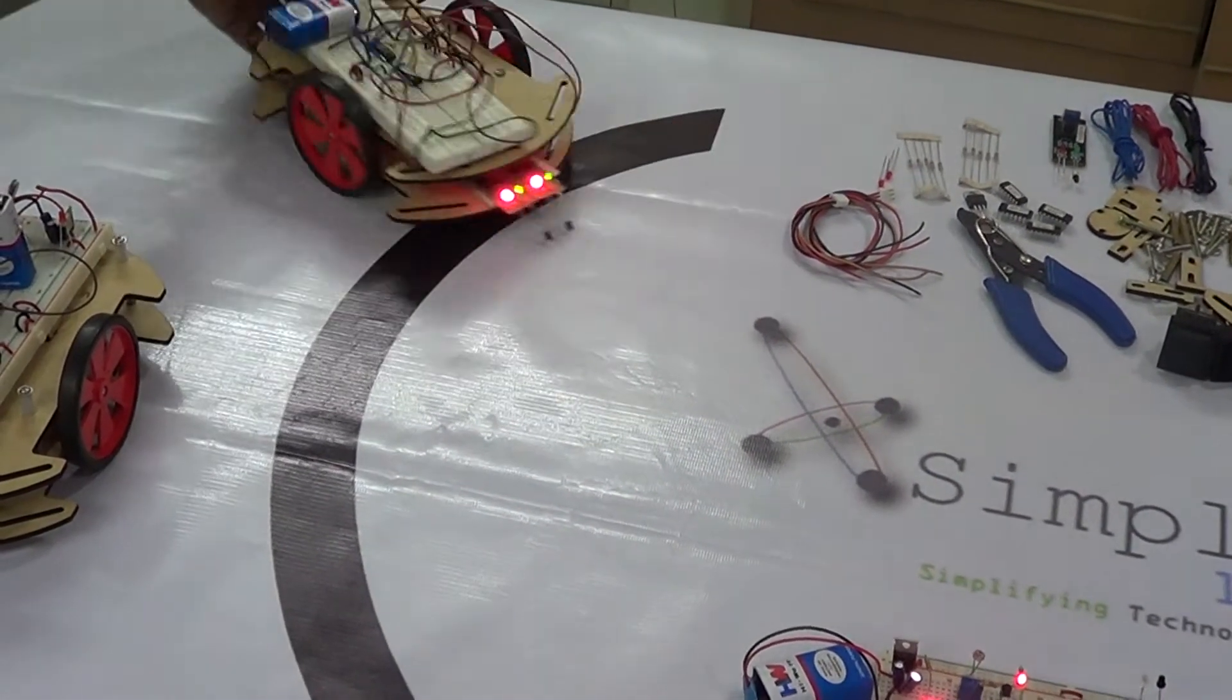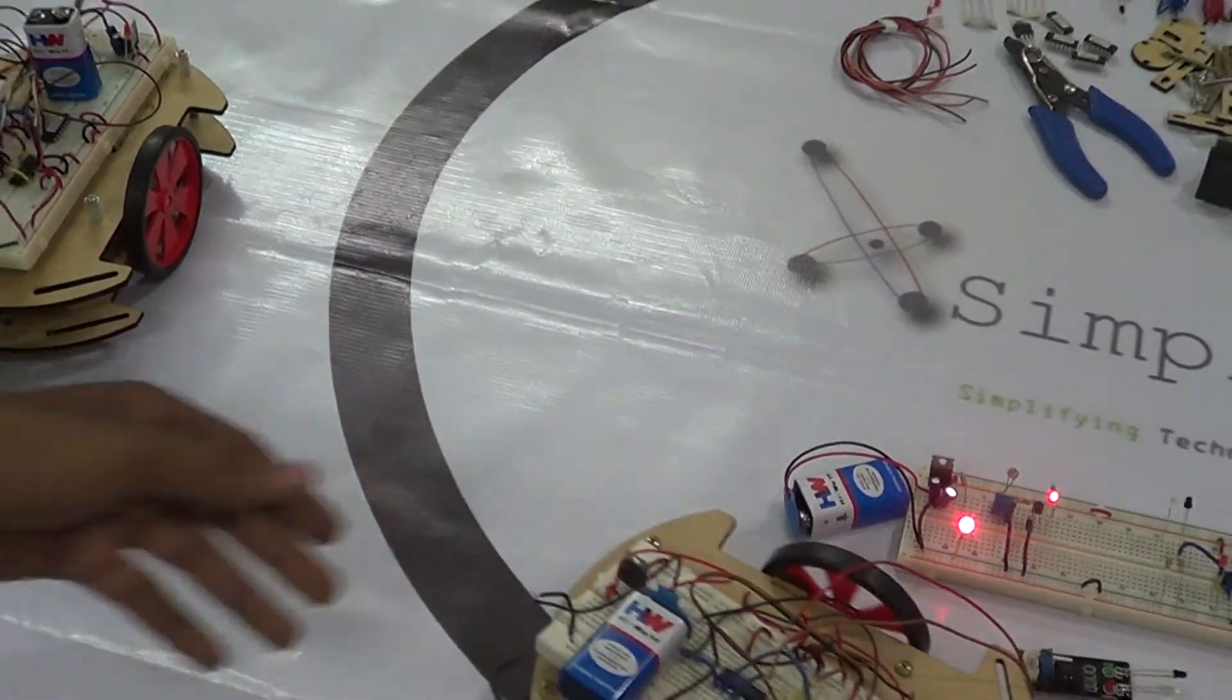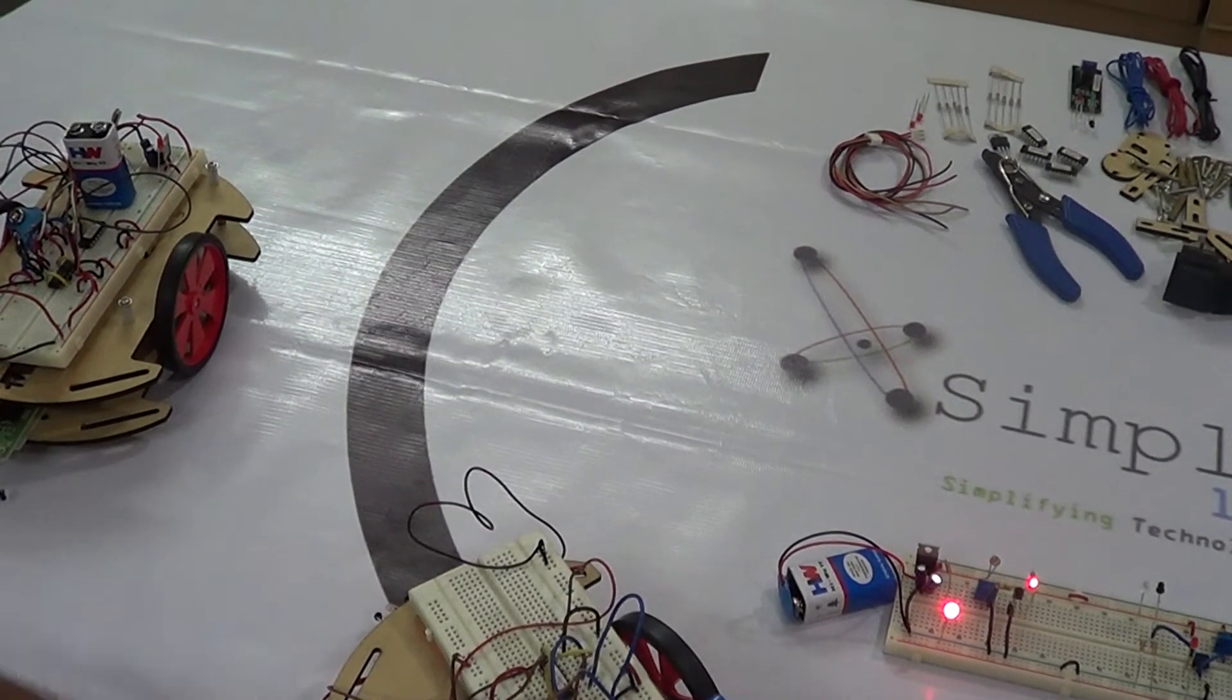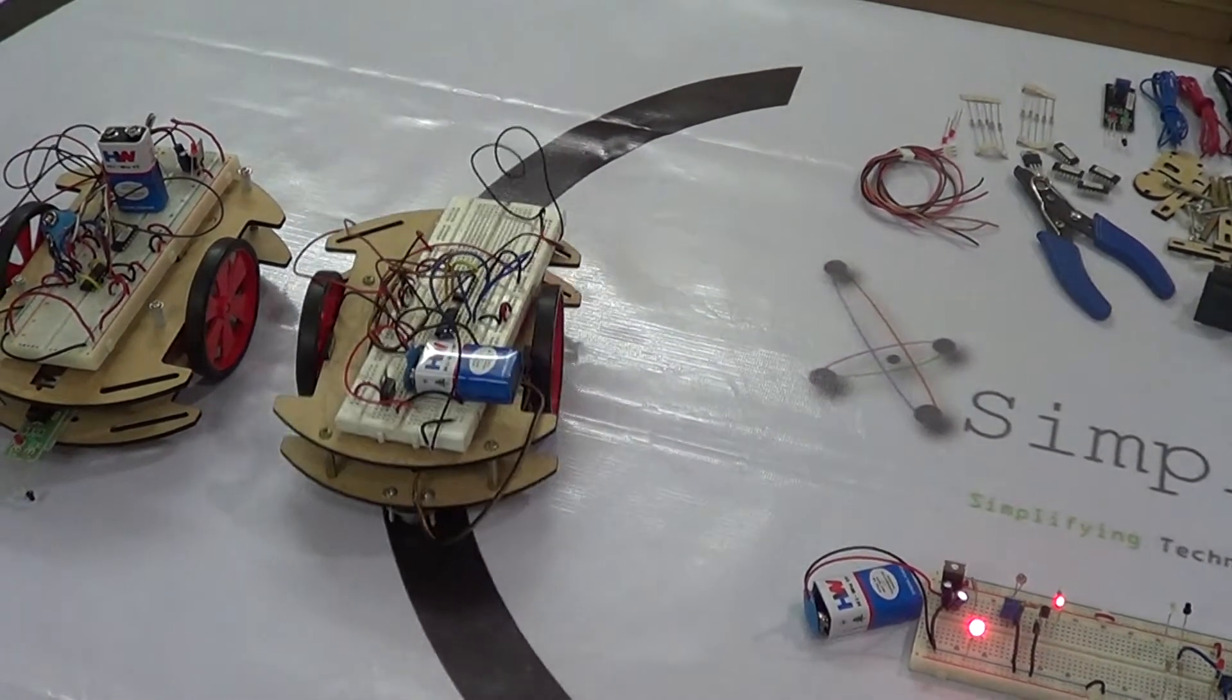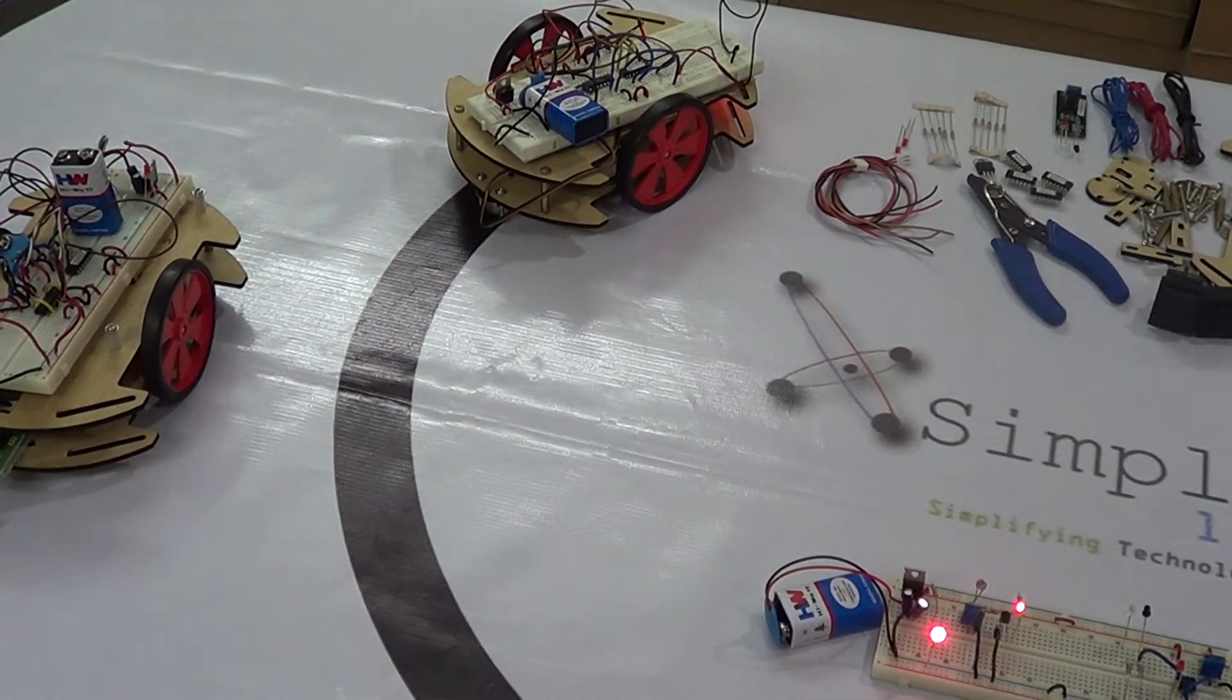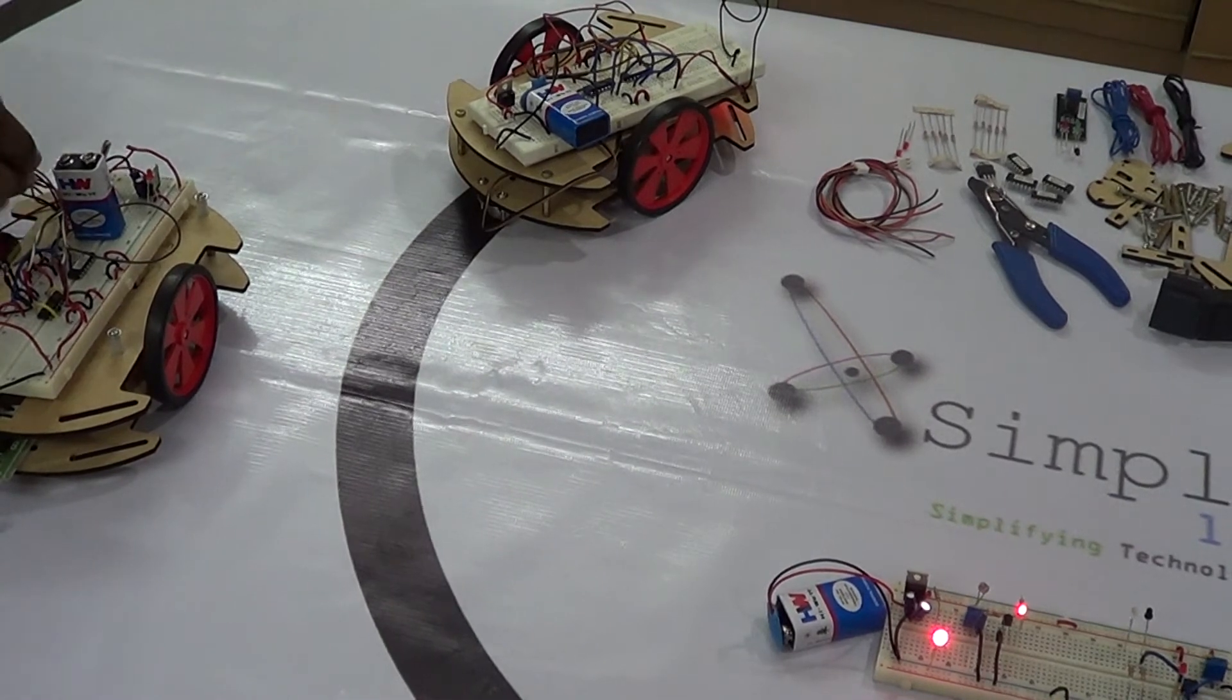So that's a line follower. Let's look at it again. So you can see it following the line. So you will learn how to build that. You will also learn how to build two other variations of the same line follower for different requirements.